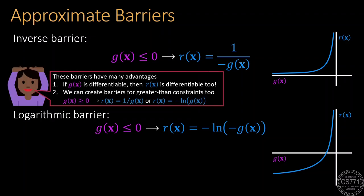However, they have many nice properties. They are differentiable if the constraint function was differentiable, which is a nice thing, since it allows us to continue using GD variants to solve the problem after the barrier has been entered into the objective.